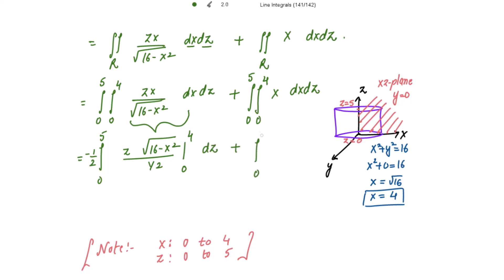For the second integral, integrating x gives x²/2, with limits from 0 to 4. Applying limits to the first integral: putting the upper limit x = 4, we get 0; putting the lower limit x = 0, we get z · √16 = 4z. With the negative sign included, this gives −(−4z) = 4z. So the result becomes the integral from 0 to 5 of (−4z) dz — accounting for the negative sign from substitution — combined with the result from the second integral.